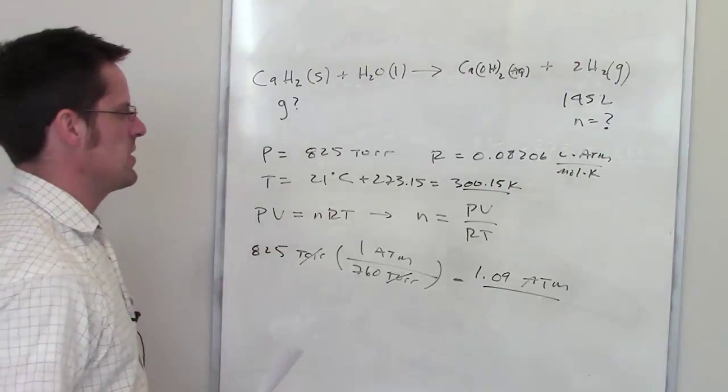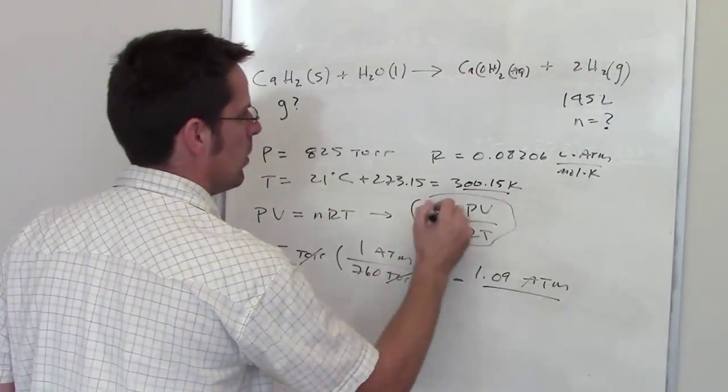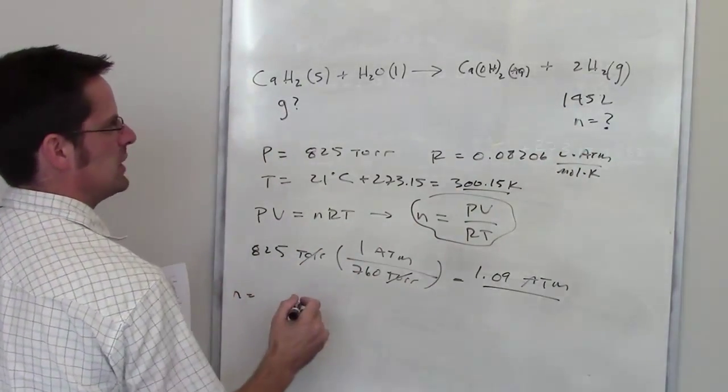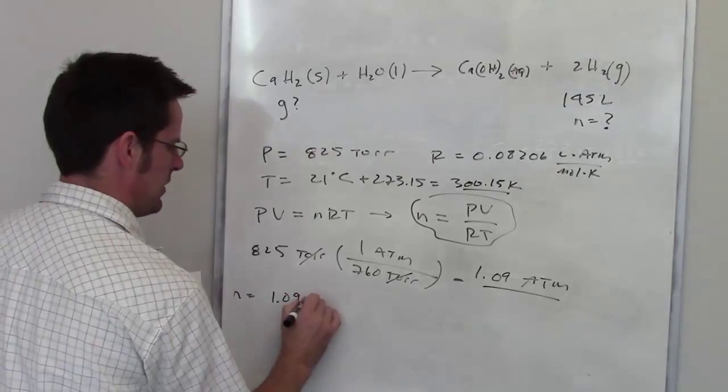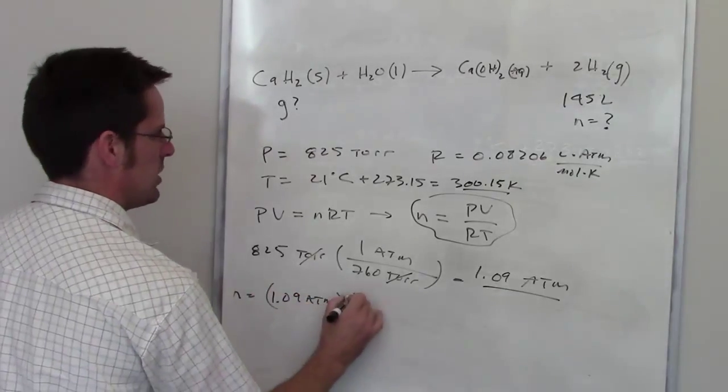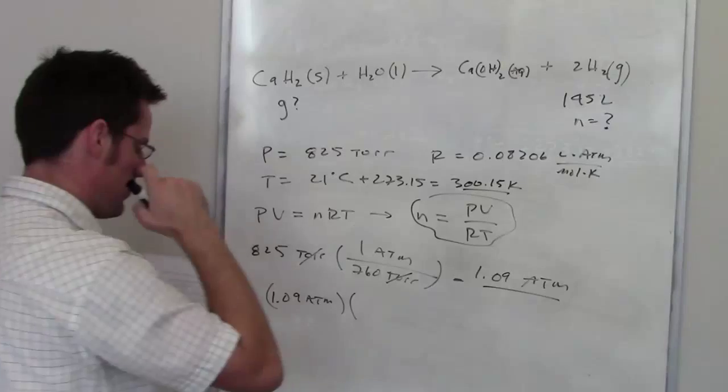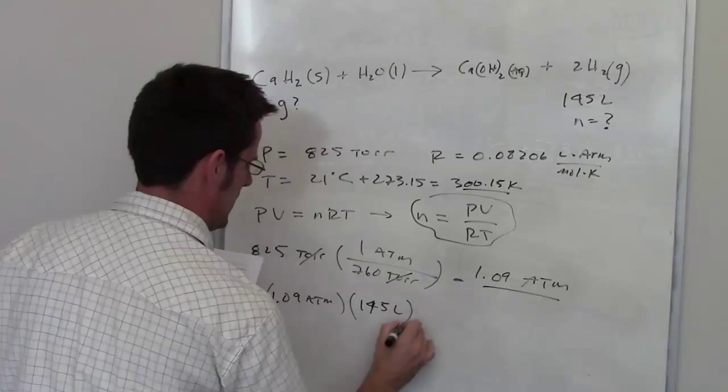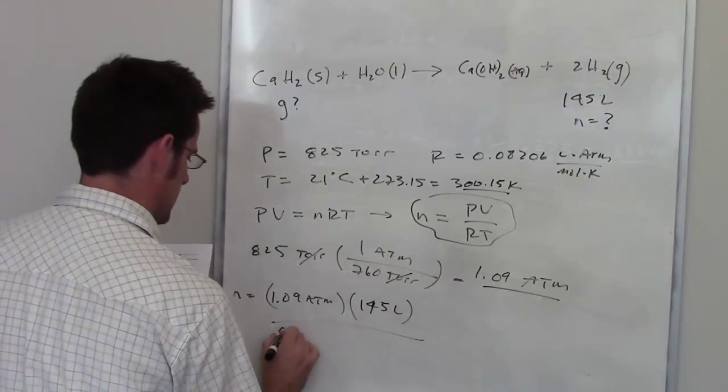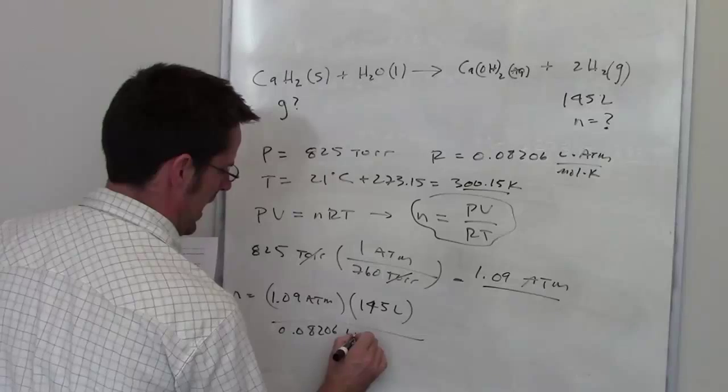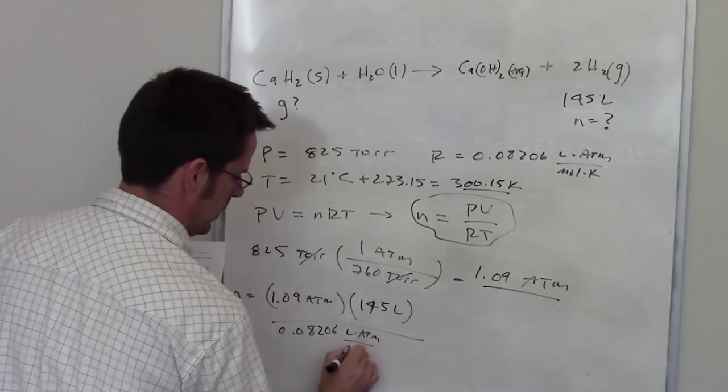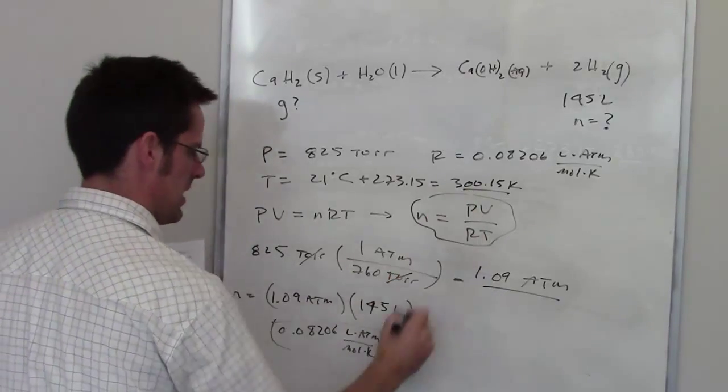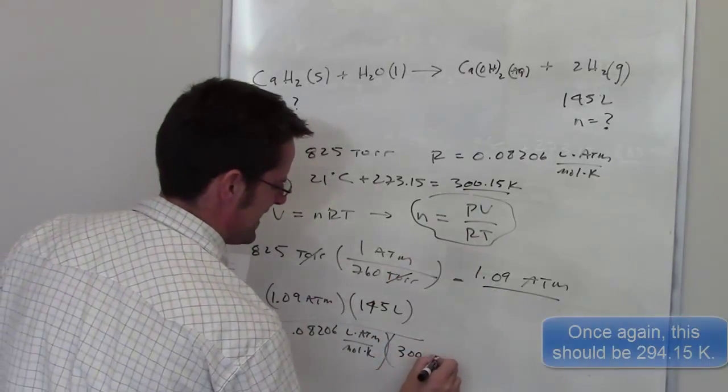So now I've got everything in the units that I need. I'm going to try and determine now how many moles of hydrogen gas this is going to be. So n equals pressure. The pressure is 1.09 atmospheres. The volume is 145 liters. That is a large volume, isn't it? 145 liters. The ideal gas constant is 0.08206 liter atmospheres per mole kelvin. And the last item here, temperature, is 300.15 kelvin.